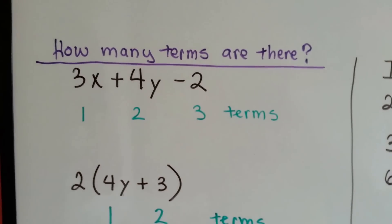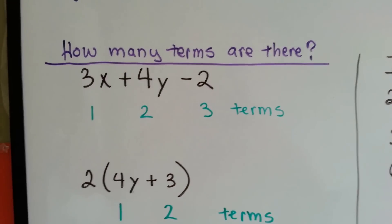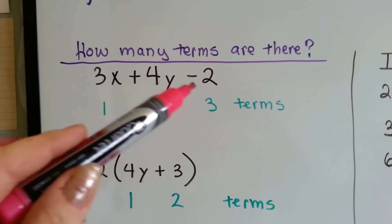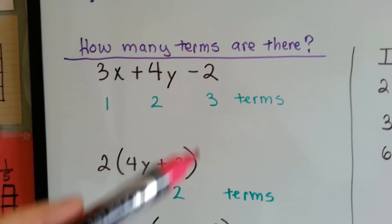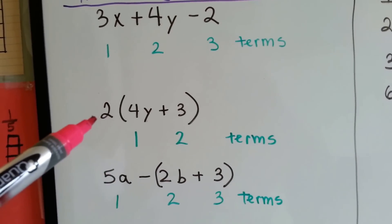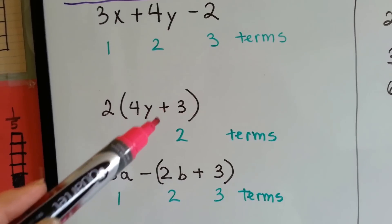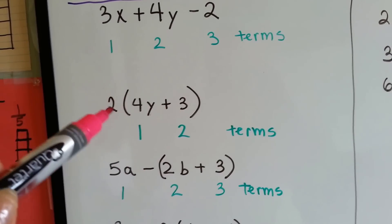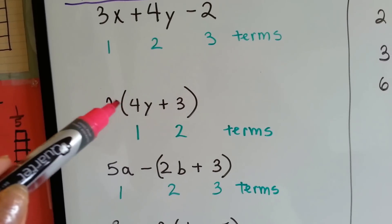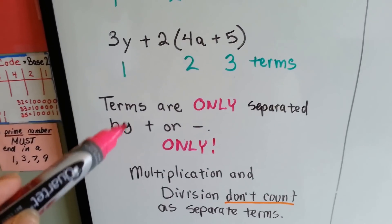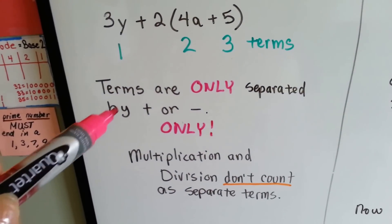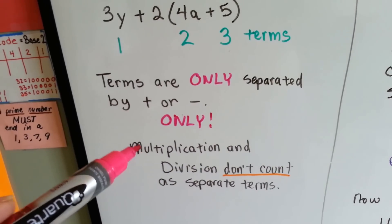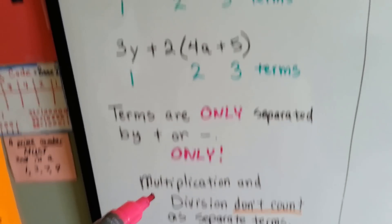How many terms are there? In this top one, there's three — they're separated by a plus or minus sign, so there's one, two, three terms. In the next one, there's only one plus sign, so there's one, two. See how this would have been multiplication? When it's next to the parentheses, it means multiplication. Terms are only separated by a plus sign or a minus sign — only. Multiplication and division don't count as separate terms.